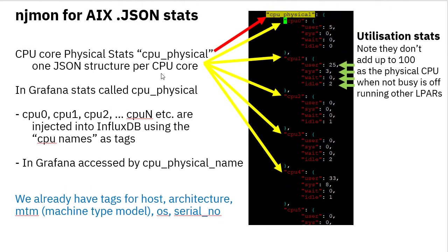We have the physical CPUs and the individual cores in the data structure. These individual items are referred to as the CPU names and they're used as tags. As the injector pushes the data into InfluxDB, it pulls out these names and adds them as a tag for this particular measurement — the physical CPU in this particular case.